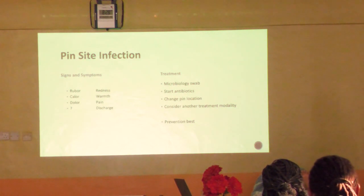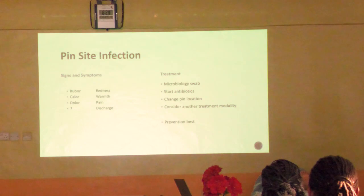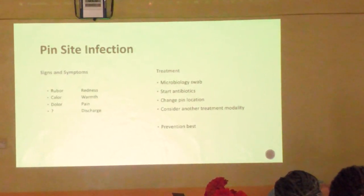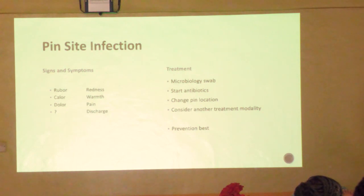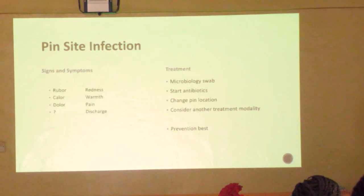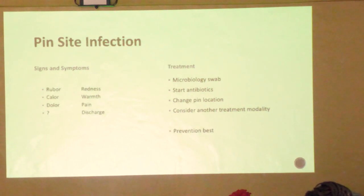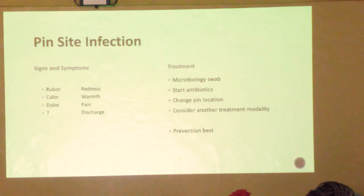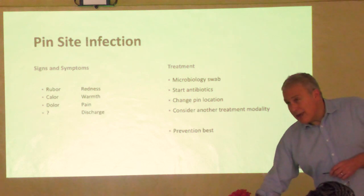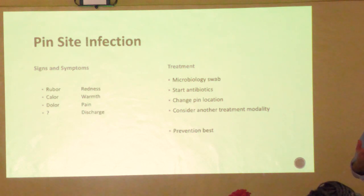The signs and symptoms of a pin site infection are the classic features of infection: rubor, calor, and discharge. In the UK we take a microbiology swab, which is almost certainly a waste of time because the infections are almost always normal skin commensals such as Staphylococcus aureus - so you're better off treating empirically with a course of oral antibiotics, increasing the frequency of pin site cleaning, and if it gets really bad, changing the pin site location or considering operative treatment. Prevention is the best approach: ensure the pin site is in the right place, inspected daily, cleaned daily, and not in too long.